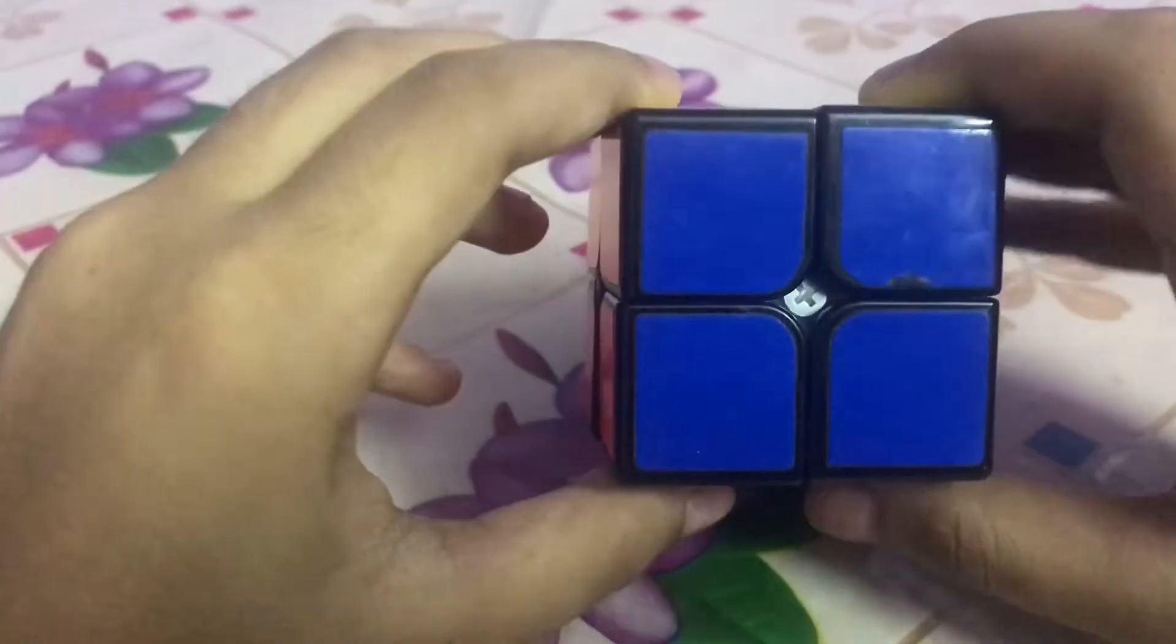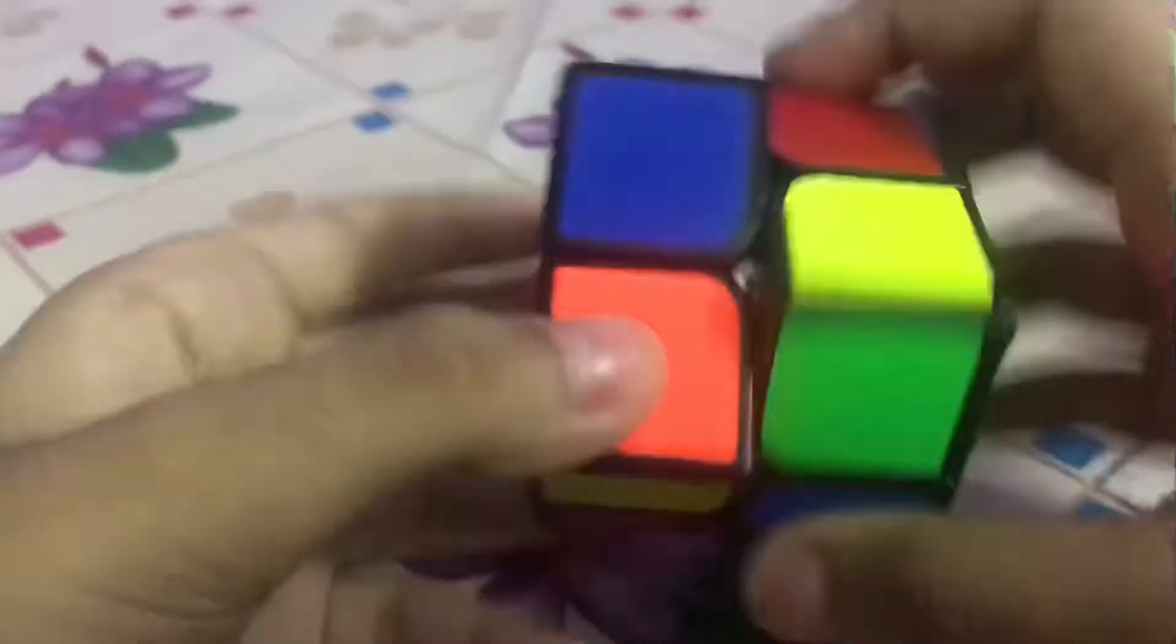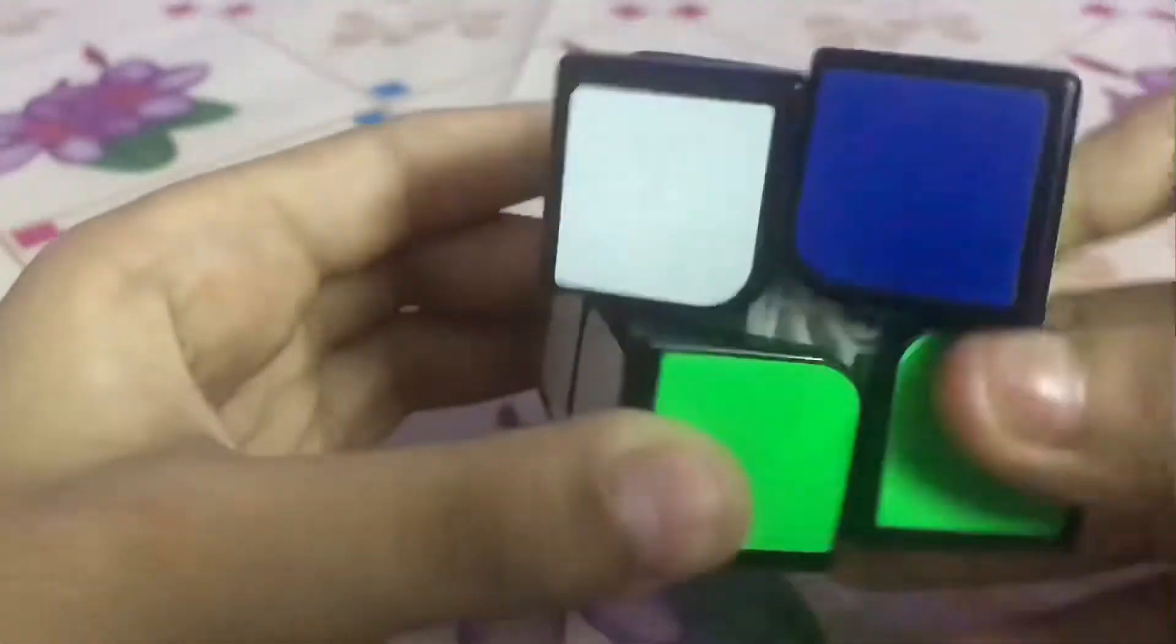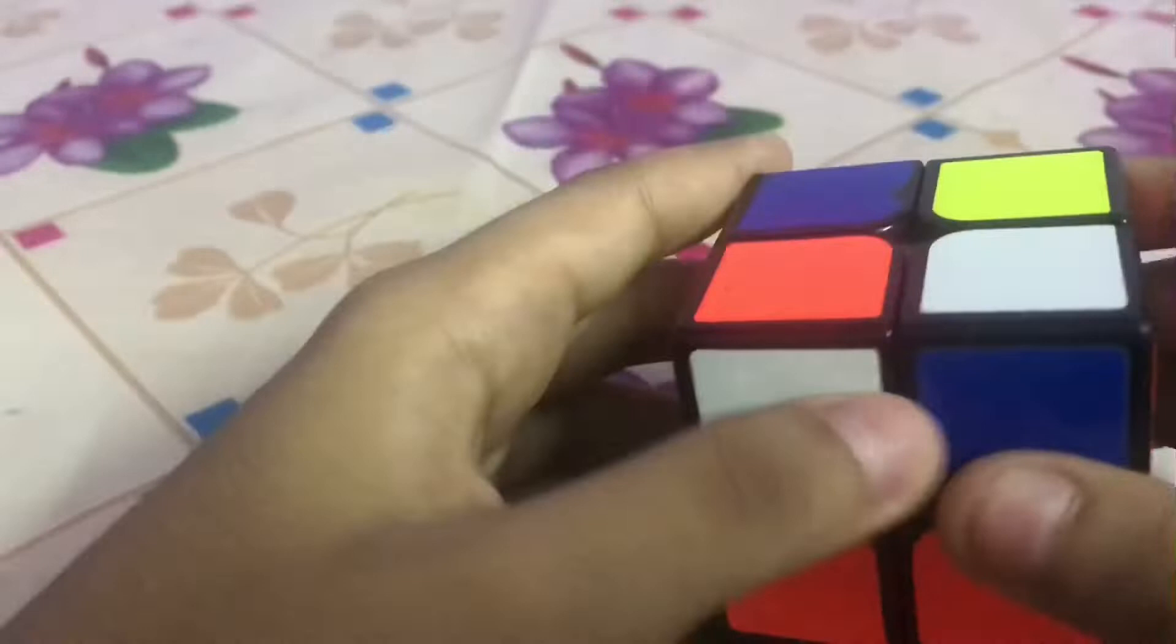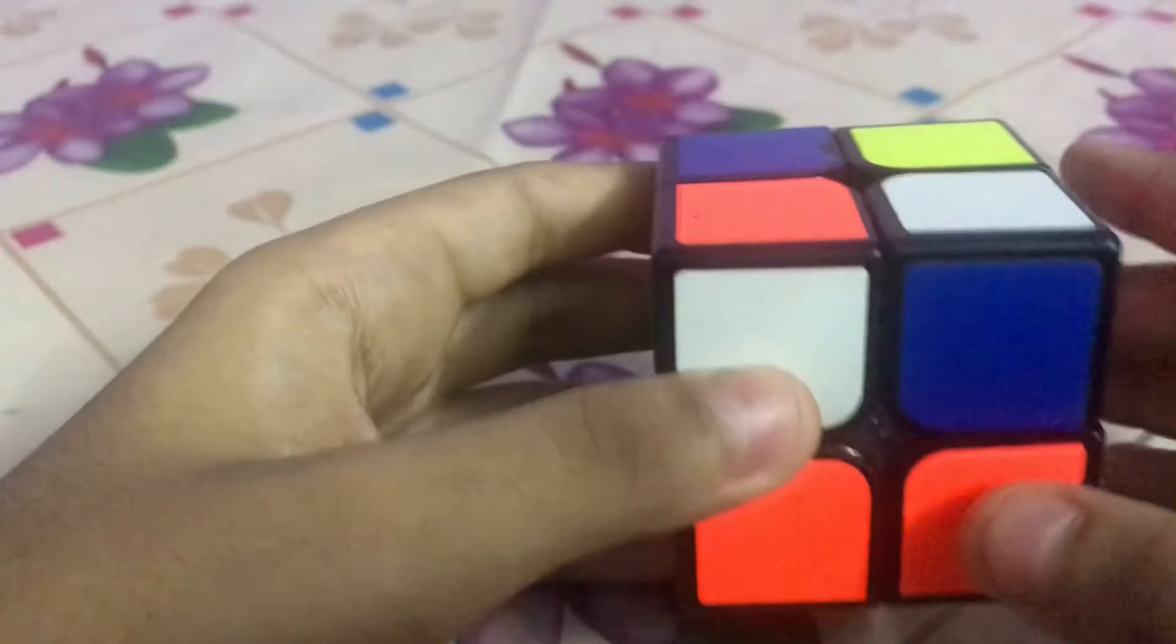Then let's solve the Rubik's cube. First, let me shuffle it. Our first step is to solve a color. I prefer white. We have to solve white here in this part. You have to solve it by yourself.